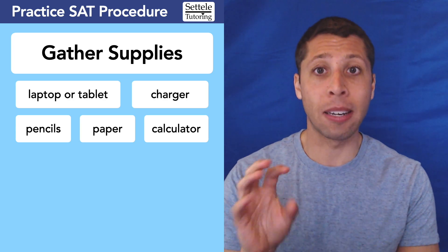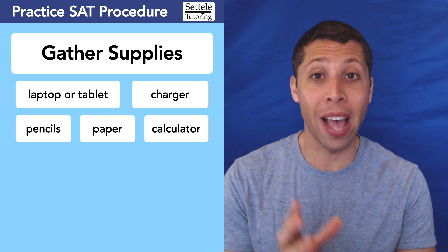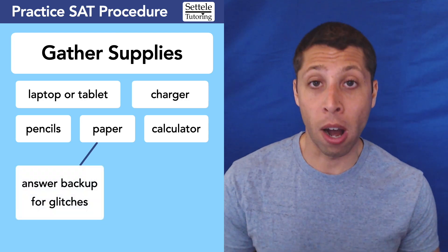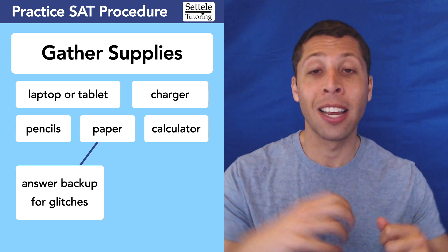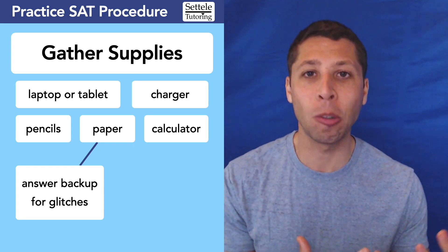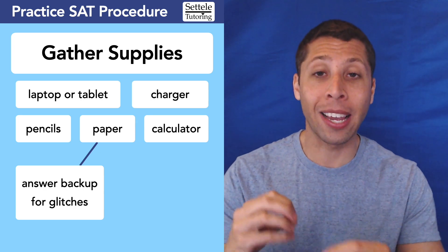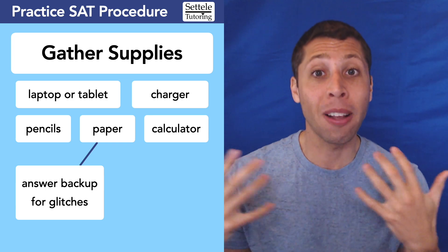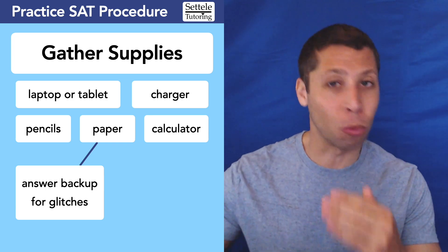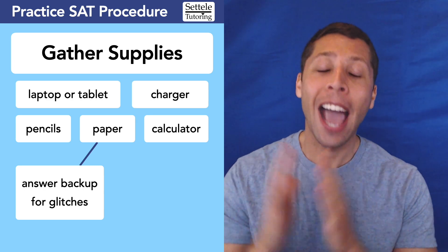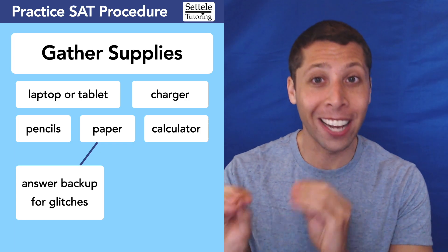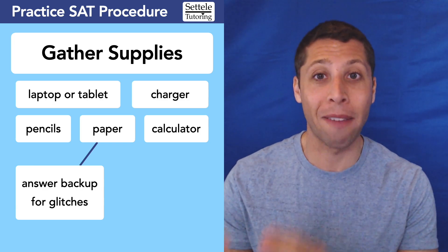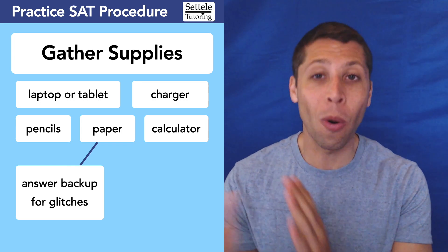I want to talk about the paper a little bit because I think that's an important part. On the real test, you will get scratch paper, so you should use that for both reading and math. For practice tests, it's especially important for two main reasons. Number one, sometimes things go wrong — I've heard stories of people taking a full practice test, submitting their answers, and then for some reason it doesn't get uploaded to College Board, and it's like you never took the test. So I'm going to put a link to a form you can print or copy yourself that lets you record your answers on paper as well. That way, if something goes wrong, you have all your answers and can just reopen the test, enter them all really quickly without changing anything, and have your scores submitted. You wouldn't need this for the real test, but you would want it for practice tests just in case.